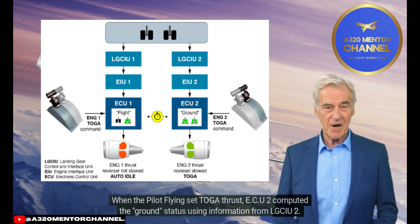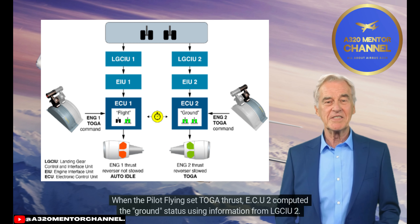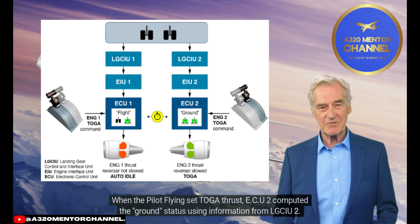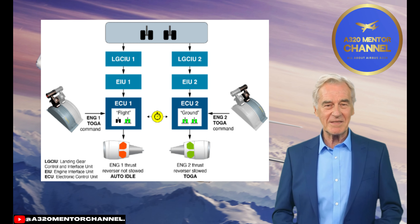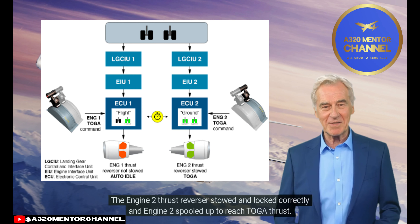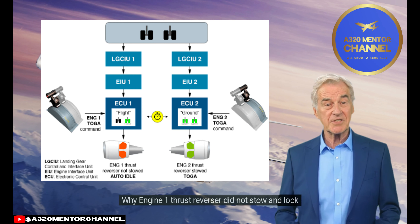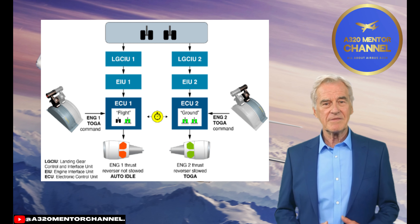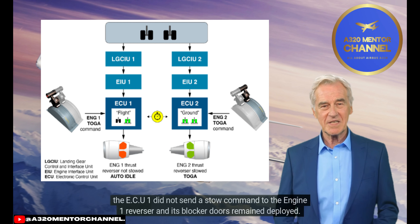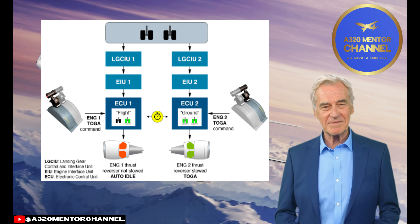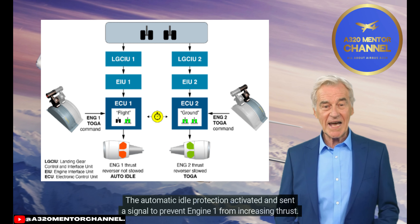Why engine 2 thrust reverser stowed and locked: When the pilot flying set TOGA thrust, ECU2 computed the ground status using information from LGCIU2. This sent the stow command to the engine 2 thrust reverser; it stowed and locked correctly and engine 2 spooled up to reach TOGA thrust. Why engine 1 thrust reverser did not stow and lock: When TOGA thrust was set, ECU1 computed the flight status using information from LGCIU1. ECU1 did not send a stow command to the engine 1 reverser, and its blocker doors remained deployed. The automatic idle protection activated and sent a signal to prevent engine 1 from increasing thrust.